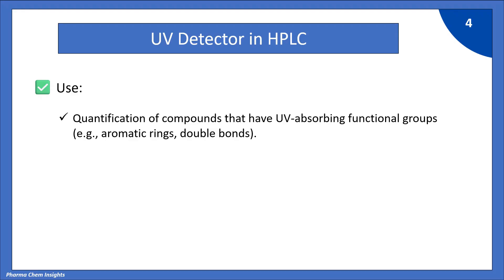The UV detector is used for quantification of compounds that have UV-absorbing functional groups, such as aromatic rings and double bonds.